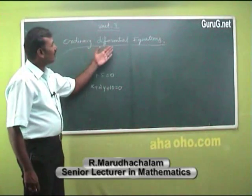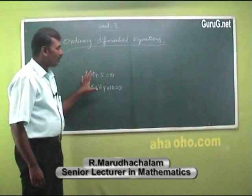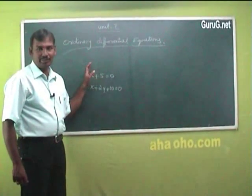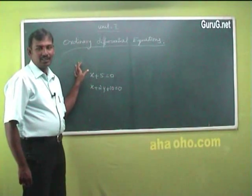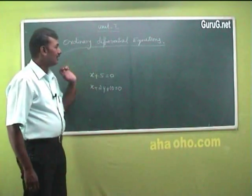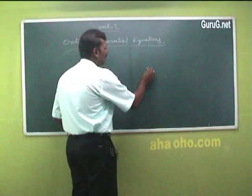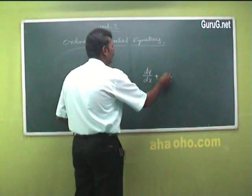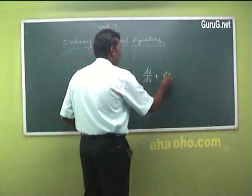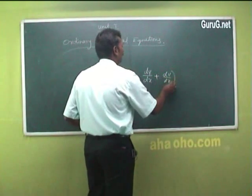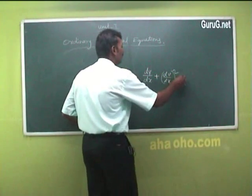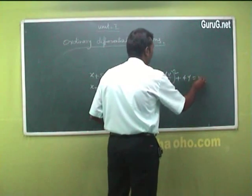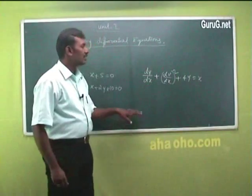An ordinary differential equation is an equation containing a differential coefficient. That type of equation is called a differential equation. For example: dy/dx plus (dy/dx) squared plus 4y equals x. This is a differential equation.